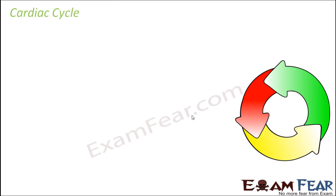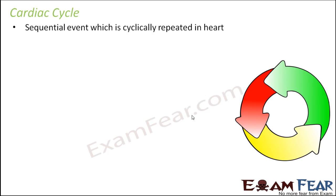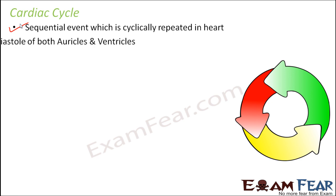This composes the cardiac cycle. The cardiac cycle is the sequential event which is cyclically repeated in the heart — joint diastole, followed by auricular systole, followed by ventricular systole, and then joint diastole again, and so on. This cycle keeps on repeating, and the entire cycle is known as the cardiac cycle because it takes place inside the heart.